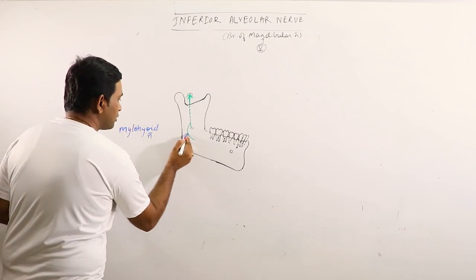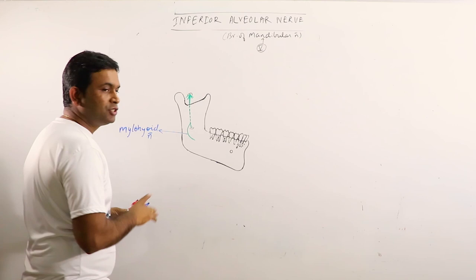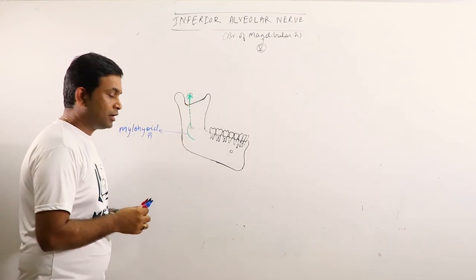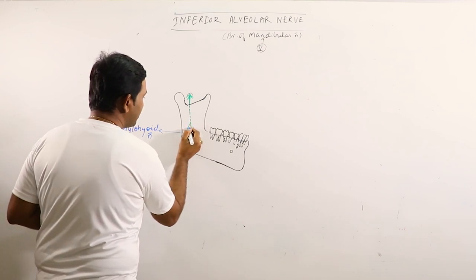Mylohyoid nerve is given just before the entry of inferior alveolar nerve into the mandibular foramen, this is the mandibular foramen.